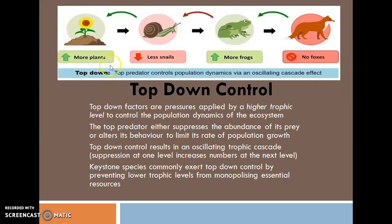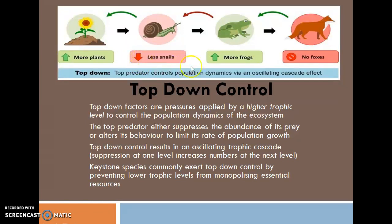In this diagram you can easily understand what the concept of Top-Down Control is. The top predator controls population dynamics via an oscillating cascade effect. These are the green plants — they are called producers or autotrophs, the first trophic level. As the number of plants increases, there will be less snails, the number of frogs will increase, and there will be no foxes. This shows the Top-Down Effect.